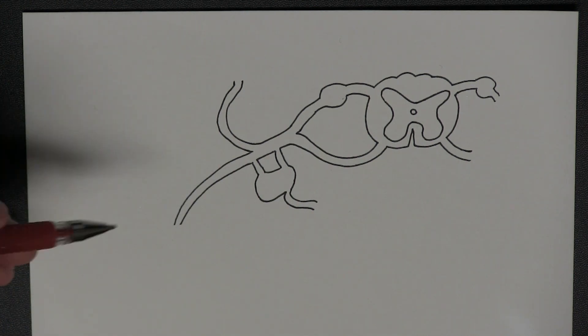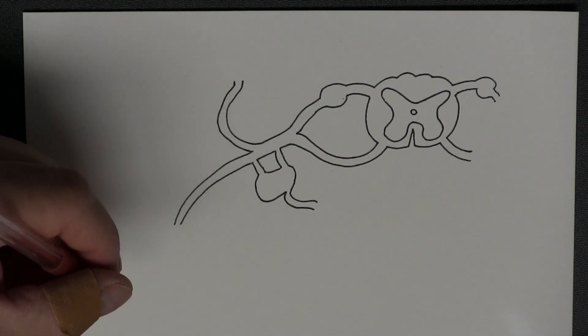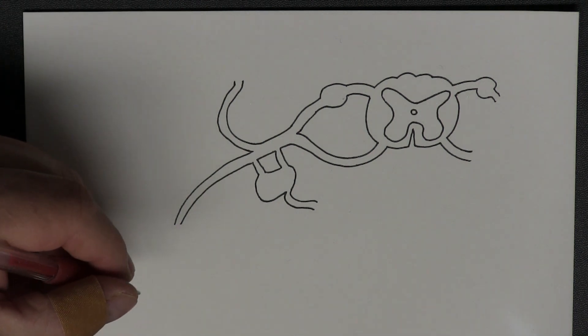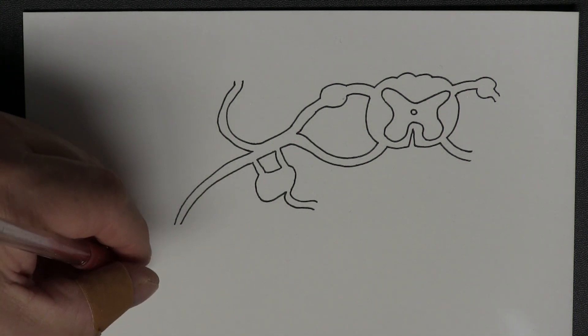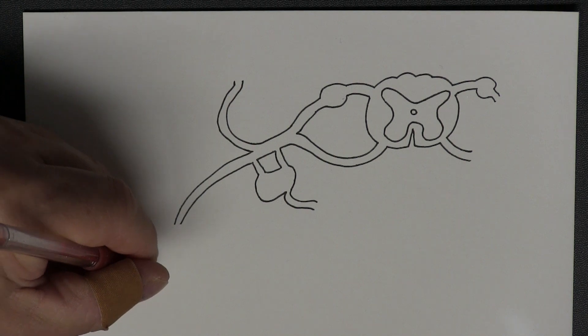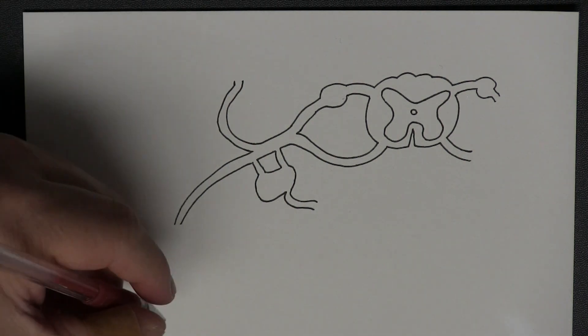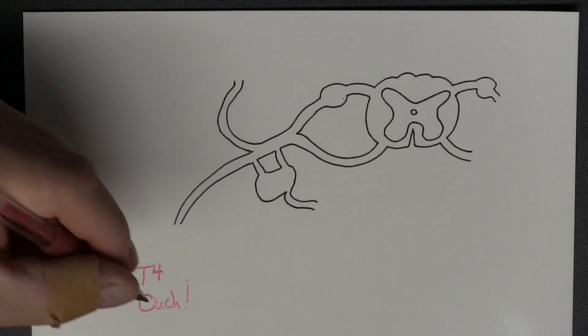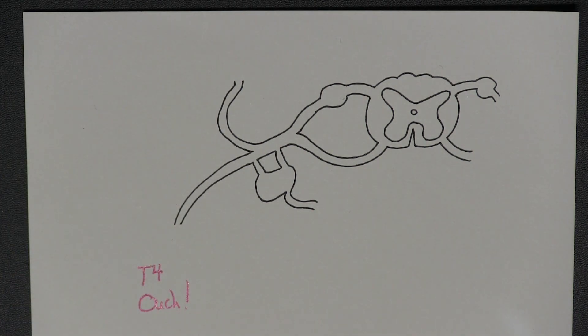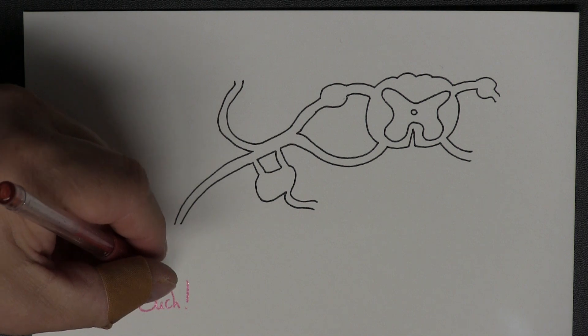So right here, we're going to illustrate what we have at the T4 dermatome. If someone pokes me with a pin in my T4 dermatome, ouch, so I felt that. It's somatic pain, well localized, pinpoint discrimination.